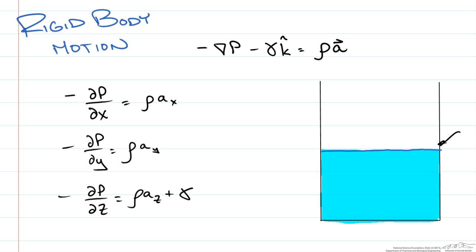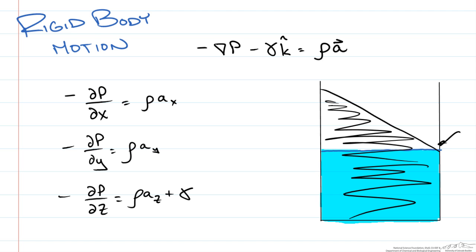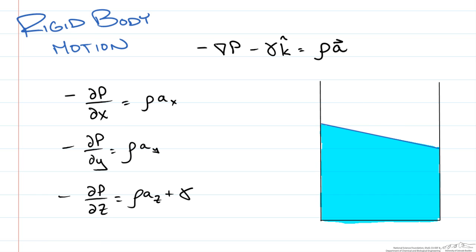We know from experience that the slope of the fluid all of a sudden changes. Maybe we would get something that looks like this and we would have the fluid move. Now of course this is under a constant acceleration. As soon as you start changing the acceleration maybe you get some sloshing around. So let's take this open container of a liquid and move it at a constant acceleration.